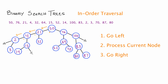Now we are at node 4's left child, which is node 2. We're going to attempt to go left, but node 2 does not have a left child. So we mark that we attempted step one but stay at node 2. The next step for node 2 is step two — process current node. In the case of a print function, we simply print the key value. We print 2. Then the next step says go right, and traversing down node 2's right pointer brings us to node 3.